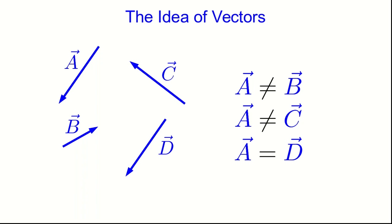On the other hand, this vector D is equal to A. They have the same magnitude, and they point in the same direction. The fact that I've drawn them in different places doesn't matter. You can move a vector around as long as you don't change which way it's pointing or its size, and the vector doesn't change.